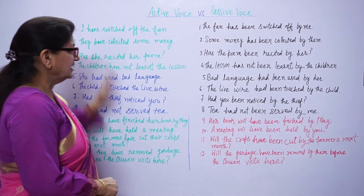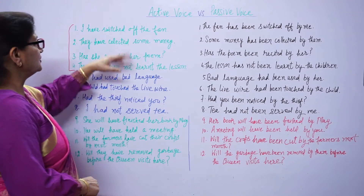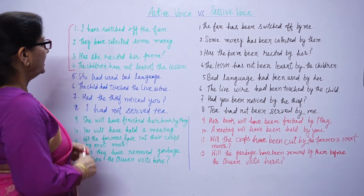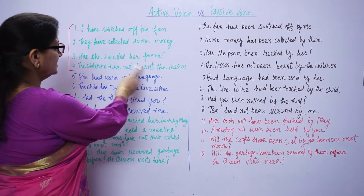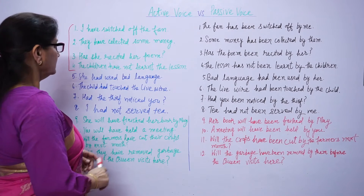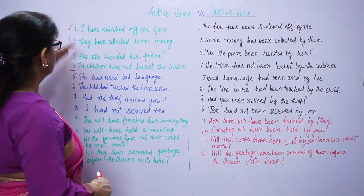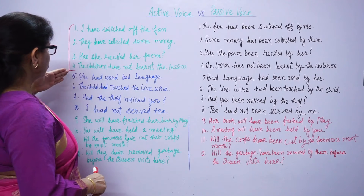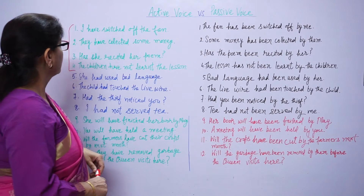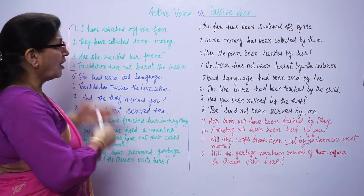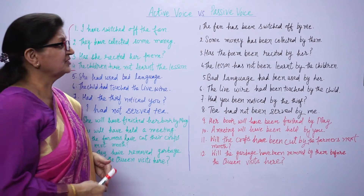See these sentences. I have switched off the fan. They have collected some money. Has she recited her poem? The children have not learnt the lesson. In these sentences, the tenses are present perfect tense. Now, how should we change these sentences into passive voice?